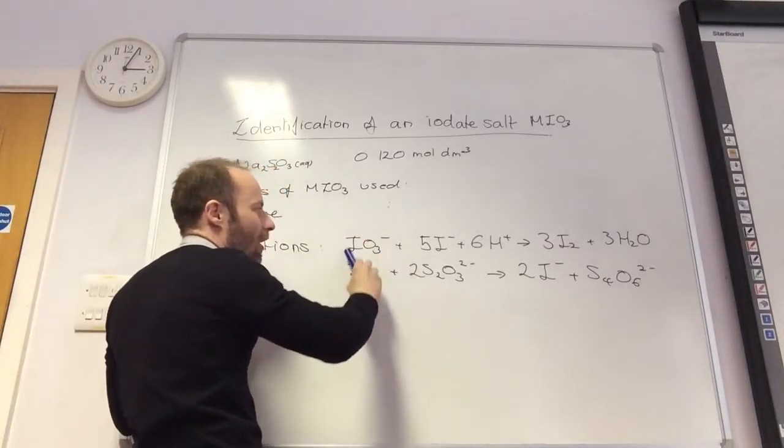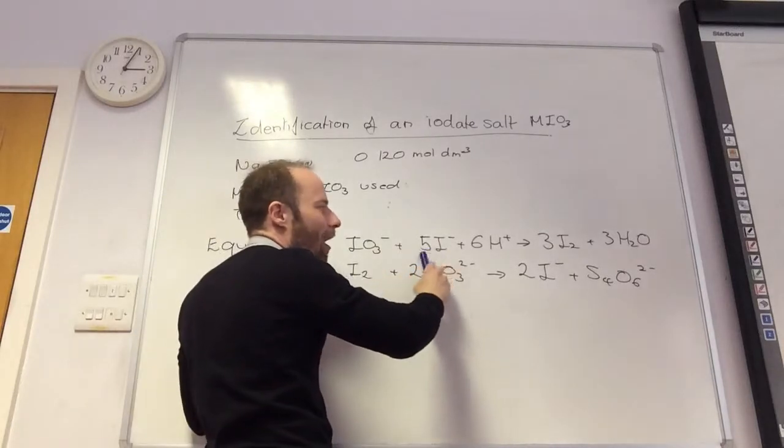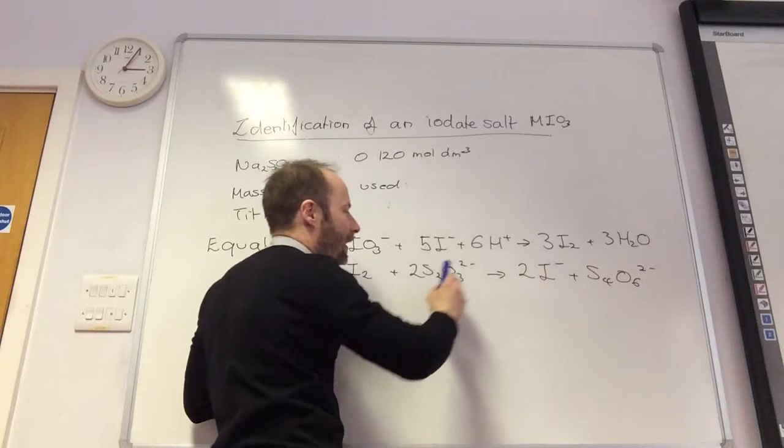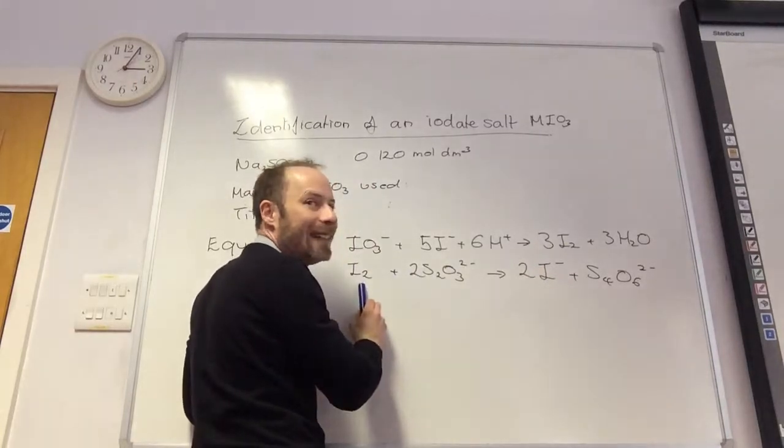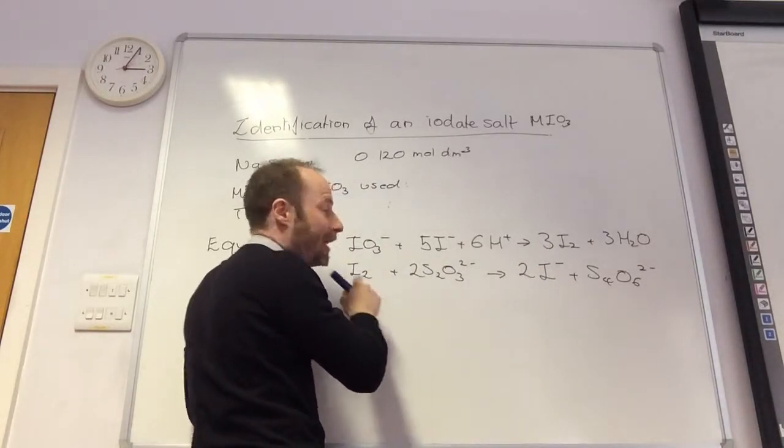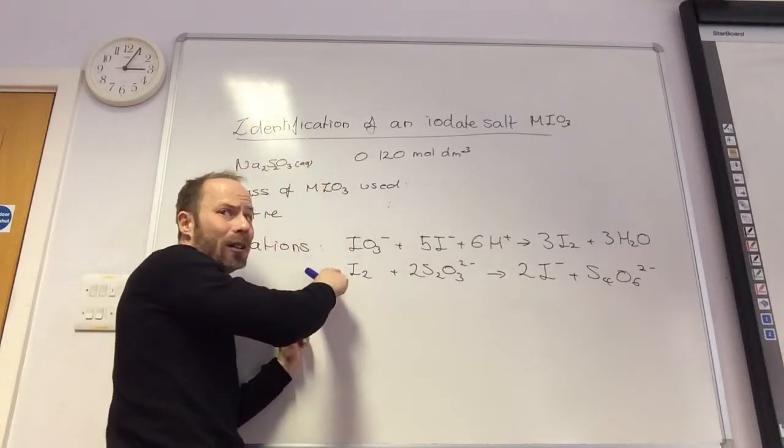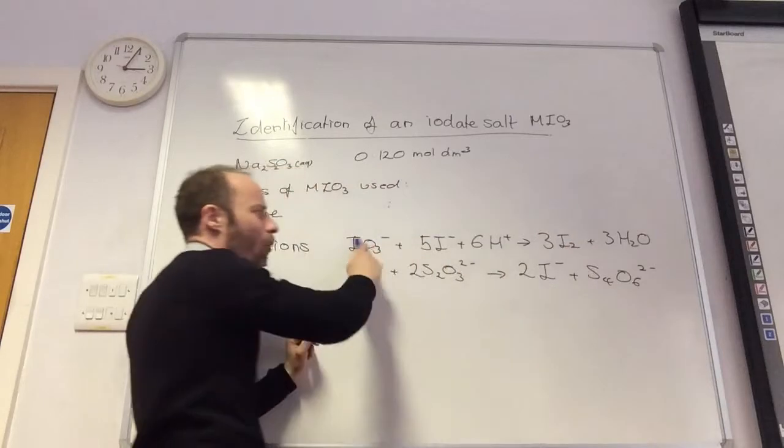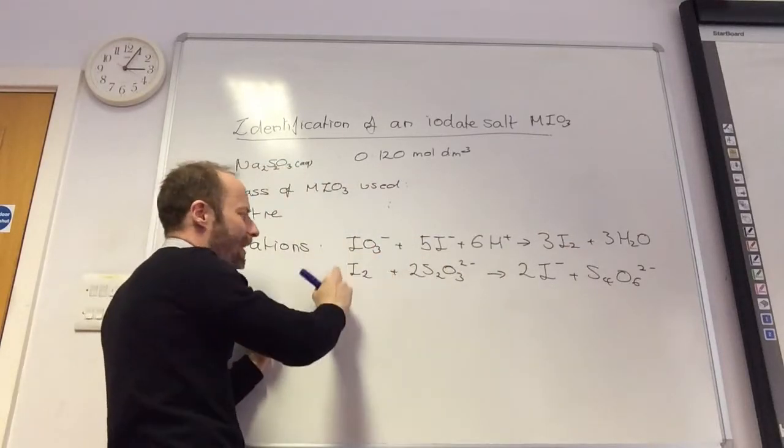I'm going to take my iodate salt, and I'm going to react it with lots of iodide ions to form iodine, and then I titrate the iodine against thiosulfate. So this is the equation you have to learn. This is the one that you'll get in an exam.